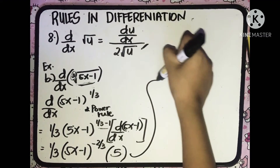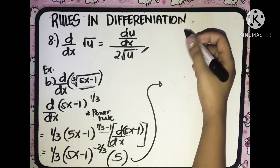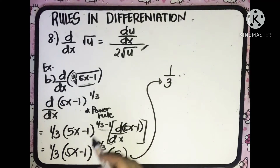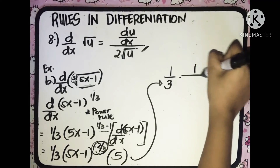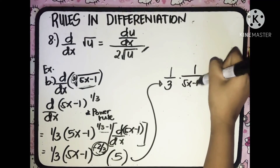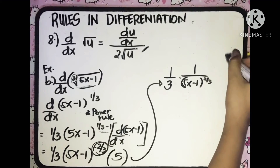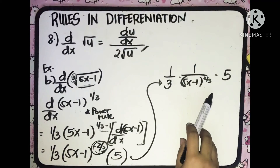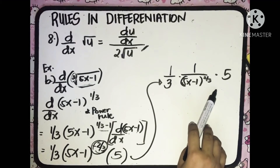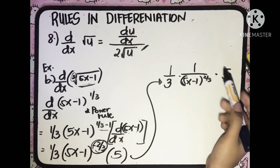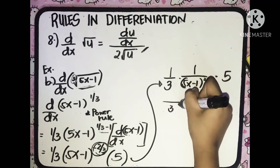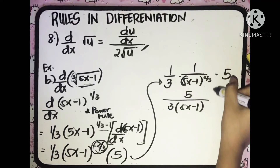Simplifying: we have 1 third, and then we have a negative exponent. For it to become a positive exponent, we put it in the denominator. So we will have 1 over (5x minus 1) raised to 2 thirds, multiplied to 5. Combining all of this, the 5 will be in the numerator. So we will have 5 all over 3 multiplied to (5x minus 1) raised to 2 thirds.